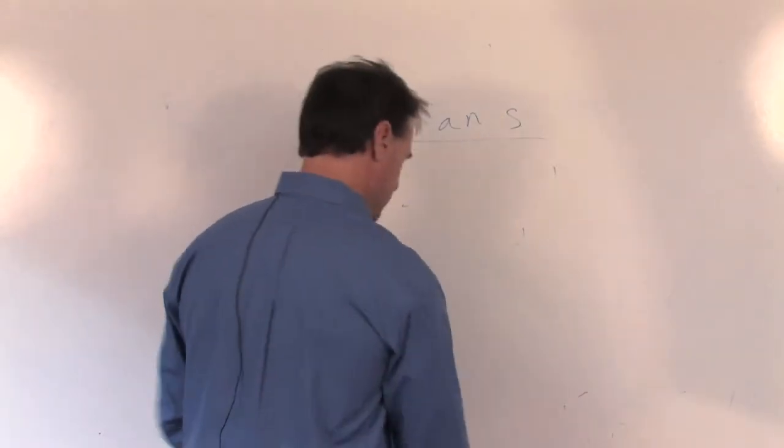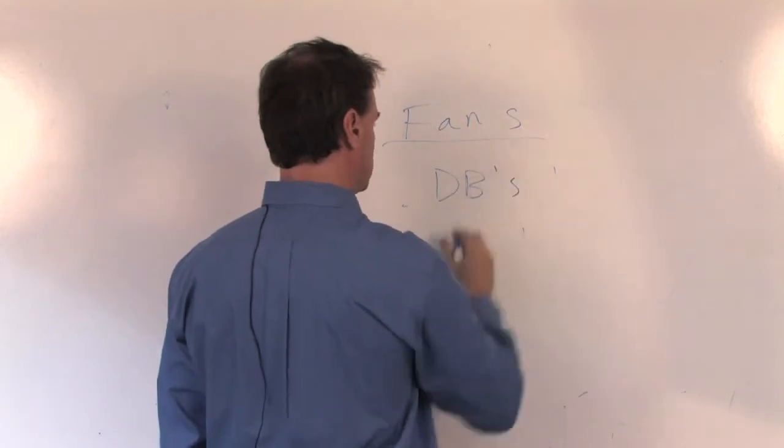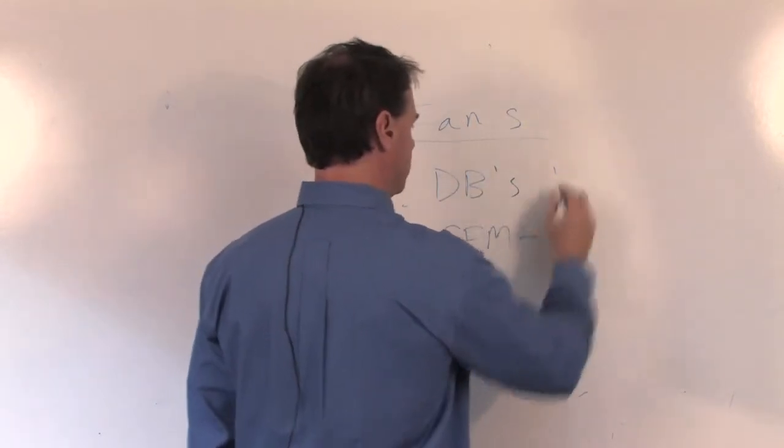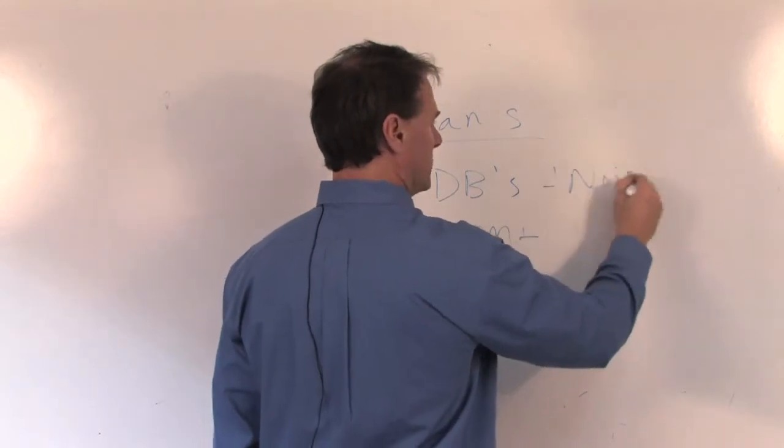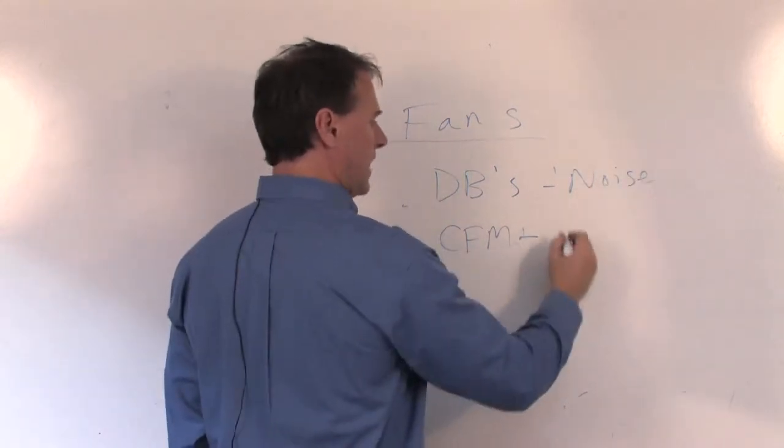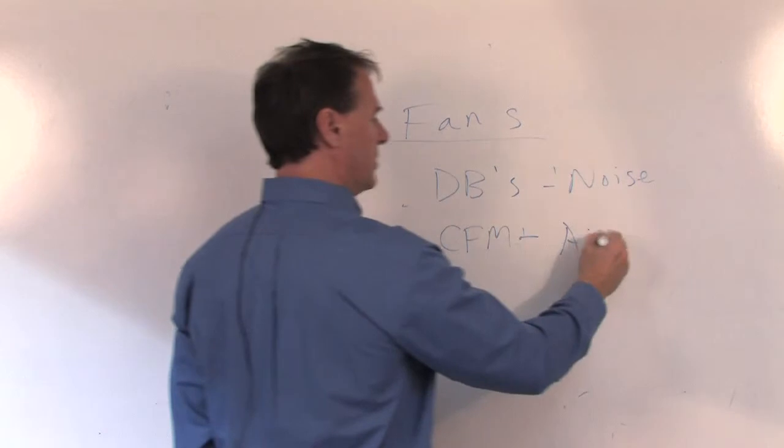There are a couple of other things with fans. DBs, which is decibel levels, is noise, and CFMs. This is simply noise, how loud it is in the back of your computer, is your fan going. Or CFMs, which is how much air movement. Centrifugal force motion, and just how much air it moves.